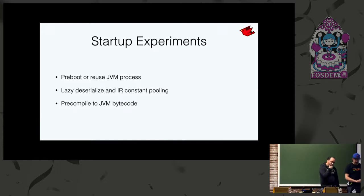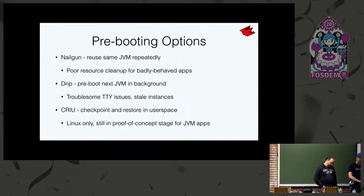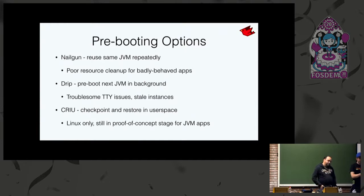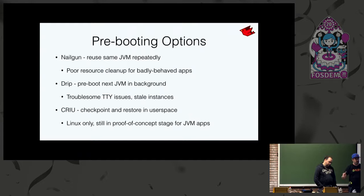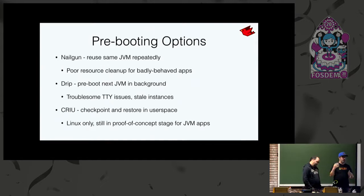Now we're going to cover current active experiments, starting with pre-booting. This is similar to what the Scala compiler or Gradle build does — spinning up a background process and throwing more work at it. We have some specific options for Rails. The first general-purpose option was Nailgun: you start a background daemon JVM and continually throw new operations at it, running in their own class loader. But it didn't work well with how Rubyists write applications — they spin up threads expecting them to go away, allocate resources for short-run processes, causing lots of resource issues.